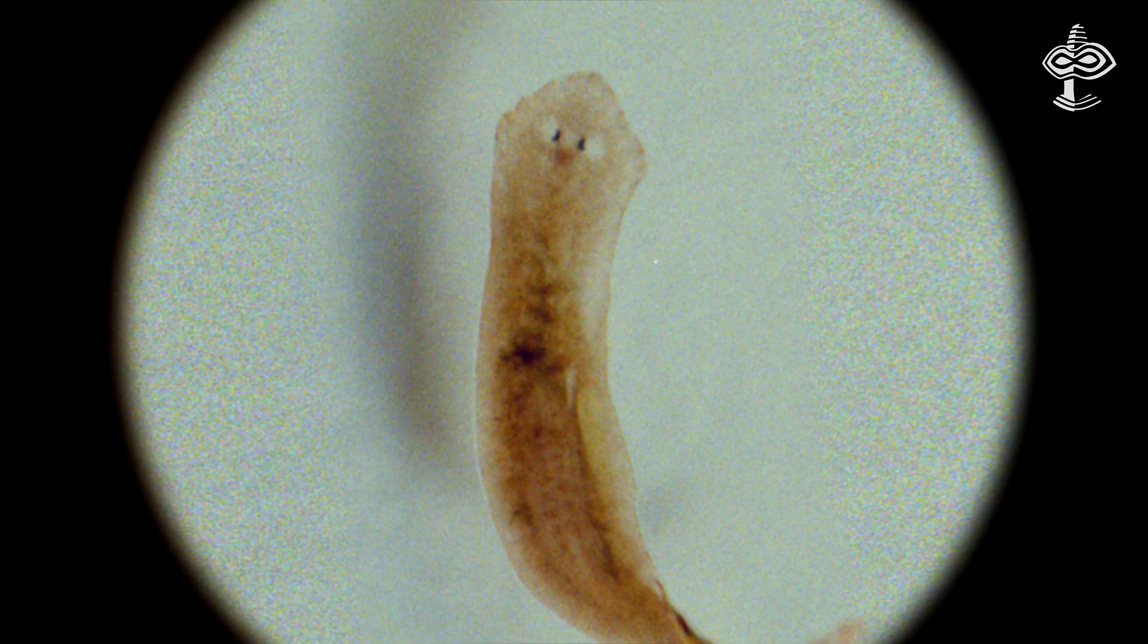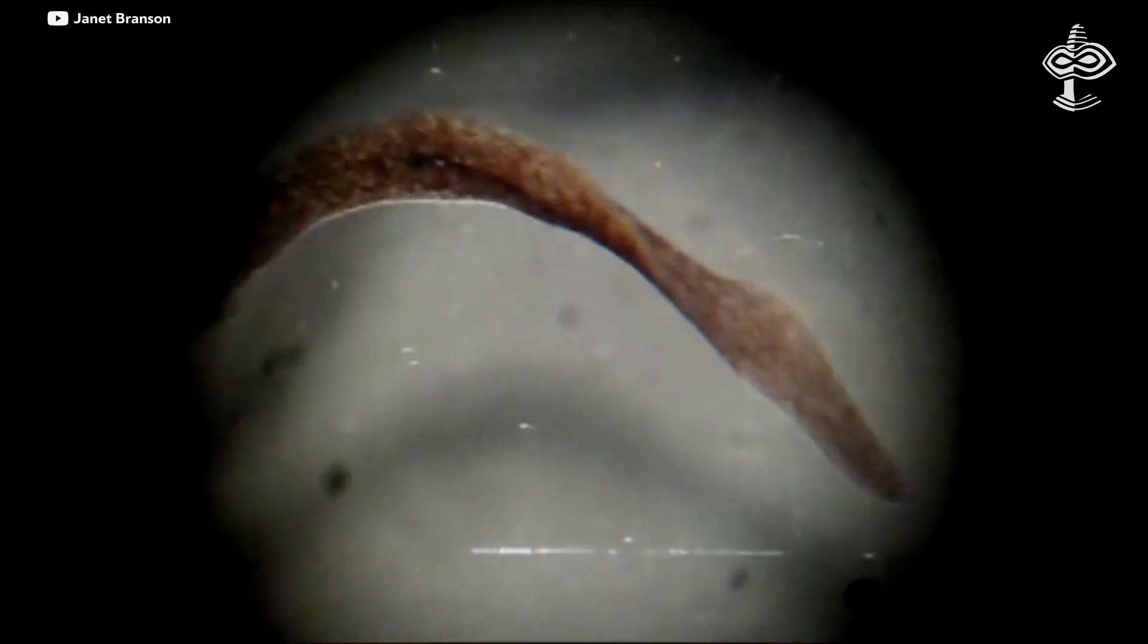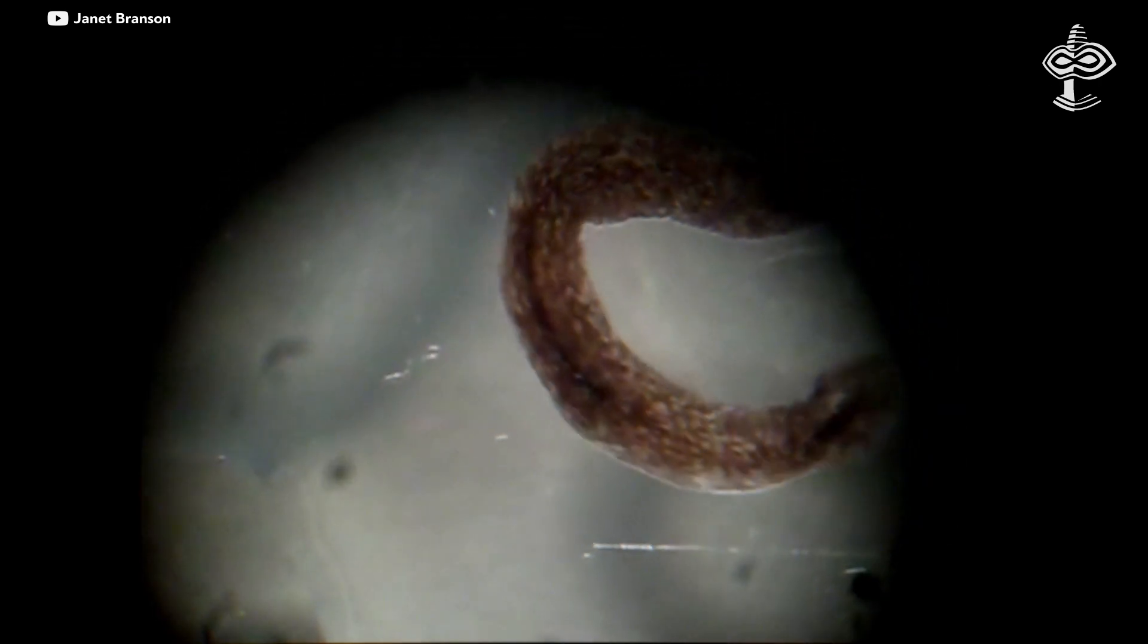Planarian flatworms are a prime example, as they can regrow any part of their body until the correct anatomy is complete, after which growth stops. The big mystery is how the system identifies the correct target shape, orchestrates individual cell behaviors to achieve it, and determines when the job is done.